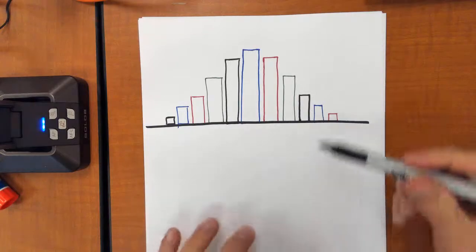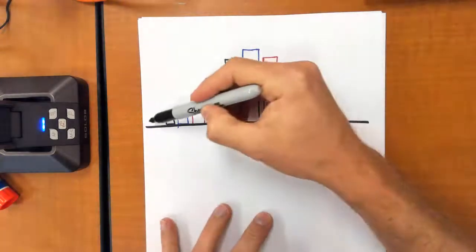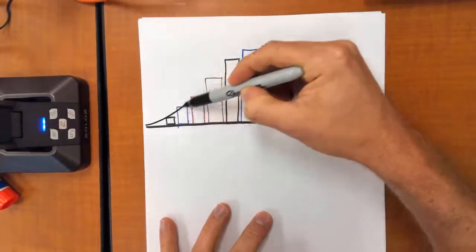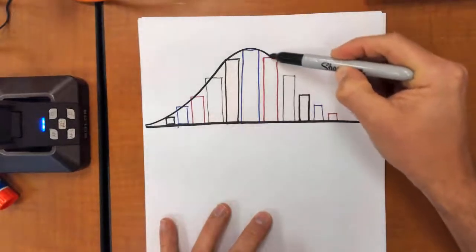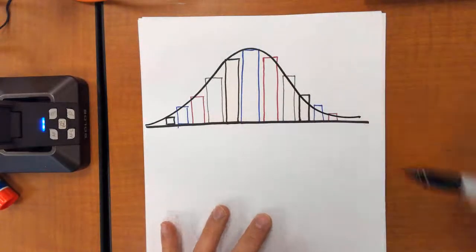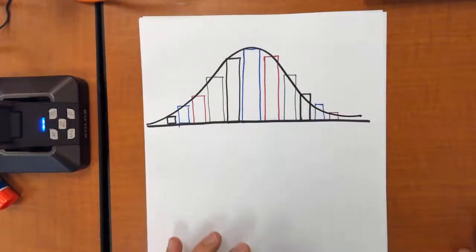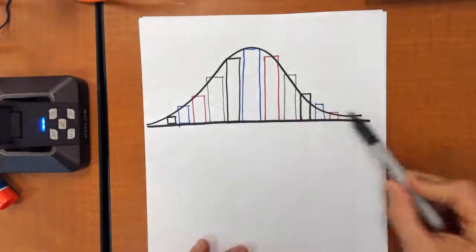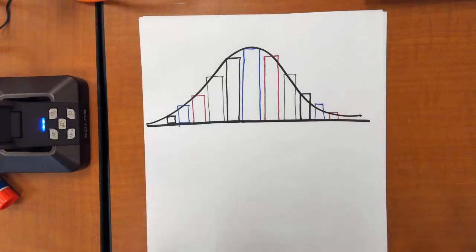Imagine if instead of having that bar, we could draw a curve to contain these values. That curve looks like a bell shape. Perhaps you've heard of a bell curve. This shape, to define a data set, is considered what we call a normal distribution.